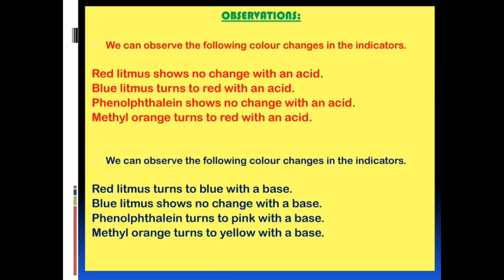We can observe the following color changes in the indicators during the activity. Red litmus shows no change with an acid; blue litmus turns to red with an acid; phenolphthalein shows no change with an acid; methyl orange turns to red with an acid. Red litmus turns to blue with a base; blue litmus shows no change with a base; phenolphthalein turns to pink with a base; and methyl orange turns to yellow with a base.